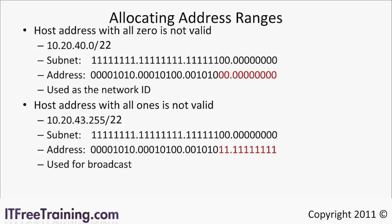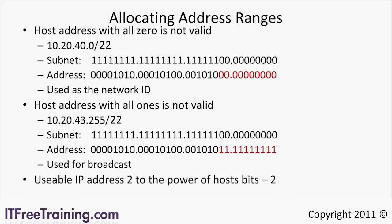When working out the subnets for your network and how many hosts you will have, the usable amount of IP addresses can be worked out using the formula 2 to the power of host bits minus 2. If you take the previous example, 2 to the power of 10 minus 2 gives us 1022 usable hosts. When dividing your networks into smaller parts using subnetting, make sure you factor in some growth for your network, otherwise you may find that your network will become full.